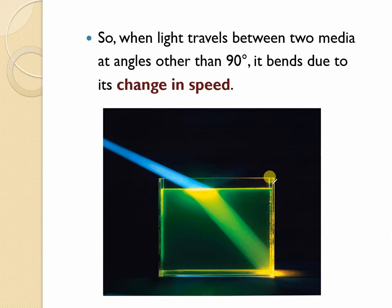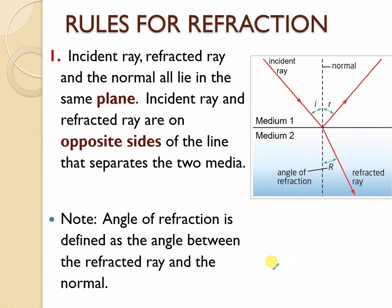When light travels between two mediums at an angle other than 90 degrees, it bends due to the change in speed. Again you can see the bending here at our medium. A couple things to ponder: the incident ray, refracted ray, and the normal all lie in the same plane. Incident ray and the refracted ray are on the opposite sides of the line that separates the two media. The angle of refraction is defined as the angle between the refracted ray and the normal.